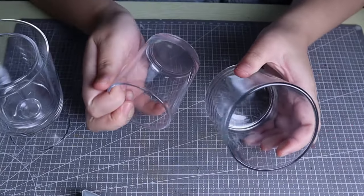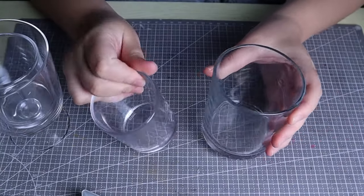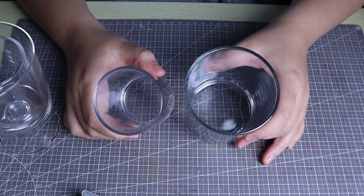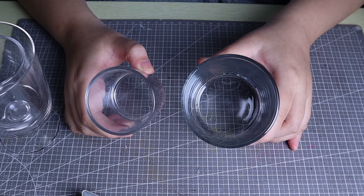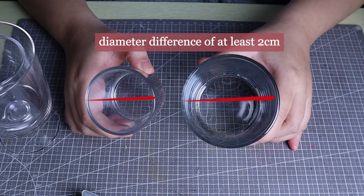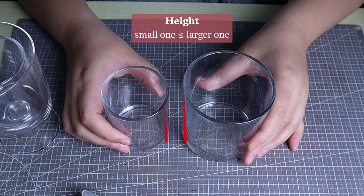Get two glasses of different diameters. We can put a smaller one inside a larger one and place the tea light candle in it. Make sure the smaller glass can hold the tea light candle. The diameter of the two cups should differ by at least 2 centimeters and the height of the larger one should be greater than or equal to the smaller cup.